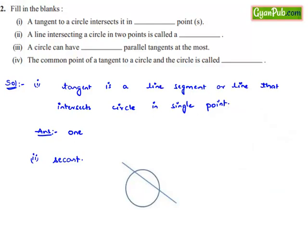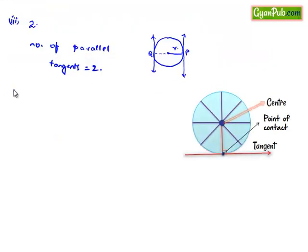Moving on to the fourth bit, the common point of a tangent to a circle and the circle is called the point of contact.